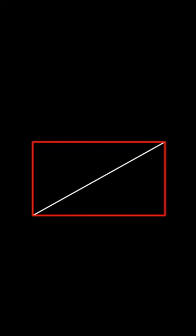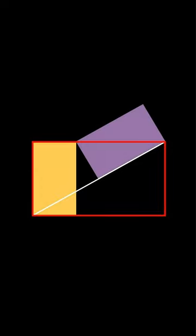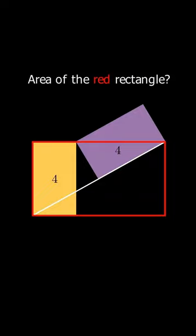Let's draw this diagonal and place two identical rectangular blocks. If the area of each block is 4, what is the area of the red rectangle?